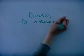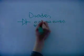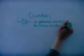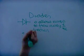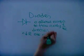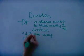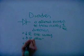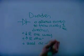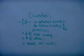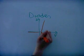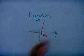Diodes only allow current to flow in one direction. This is because in one direction the diode has a low resistance, but a very high resistance the other way. They are used to change AC to DC. This graph illustrates how the diode behaves.